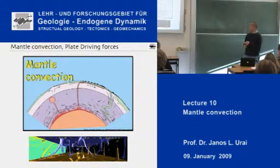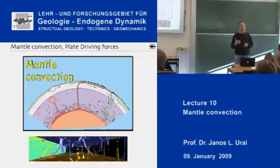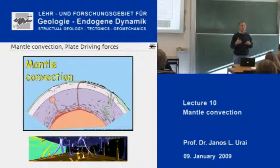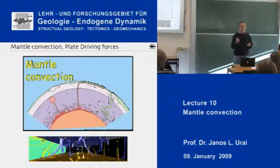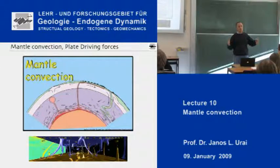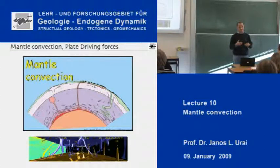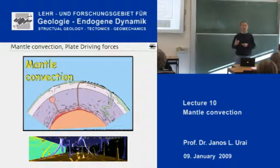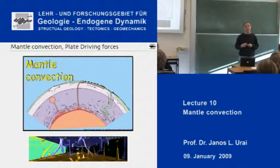We have now seen a number of times that if you look at the mantle of the Earth at a very short time scale, it is a solid — it is a strong solid that transmits earthquakes. But if you look at it at a long, long time scale, over many millions of years, it really works like a fluid. Fluids have certain properties like viscosity, and fluids can move under very small stresses, and this will lead to convection.